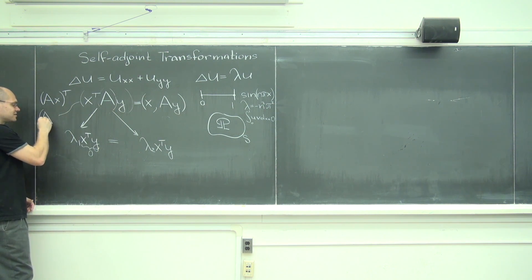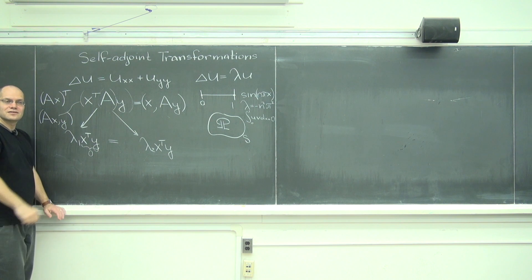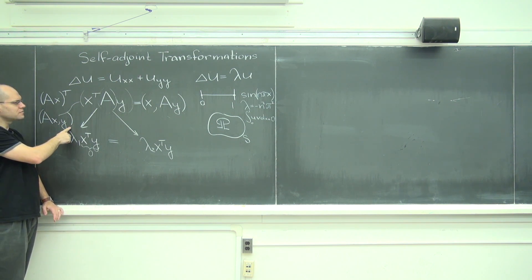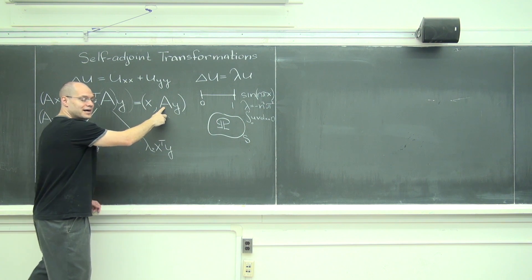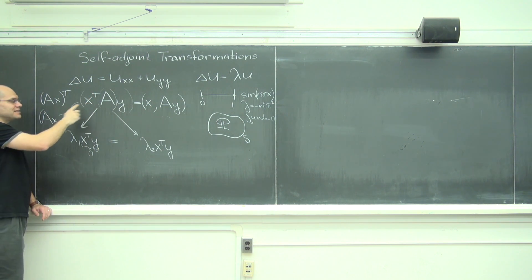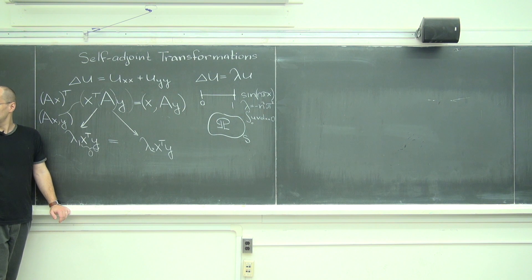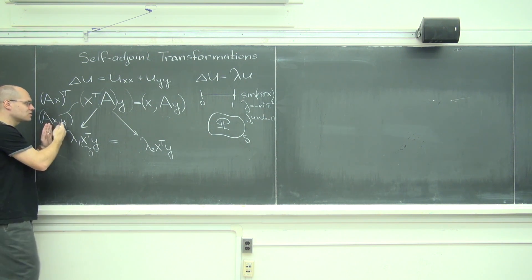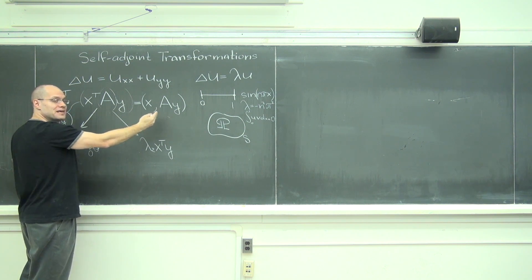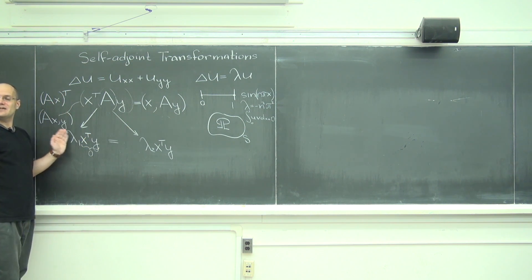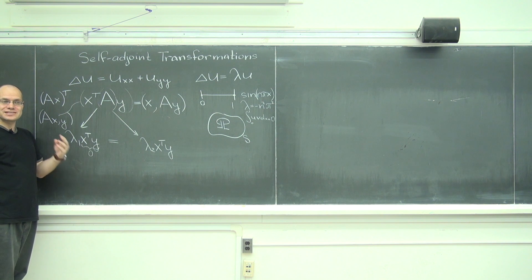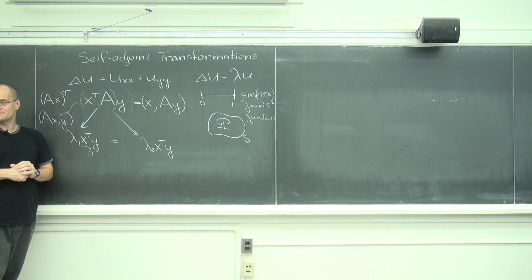Or it can be interpreted as A x dotted with y, right? So you can either put A on y or you can put A on x. And because A is symmetric, it doesn't matter which one you put it on. But because in this way of speaking I'm only using the term inner product and linear transformation, that presents a generalization to arbitrary linear spaces and arbitrary inner product.